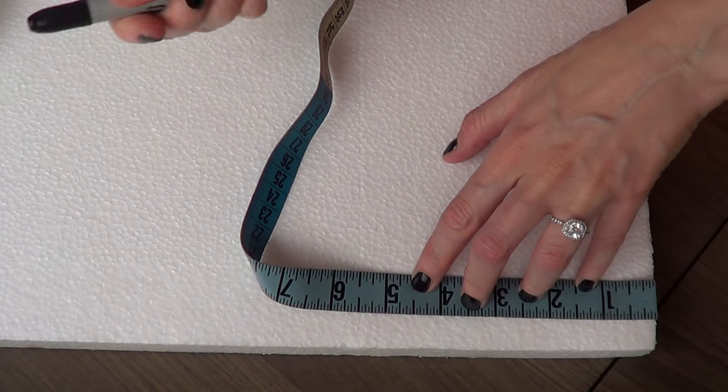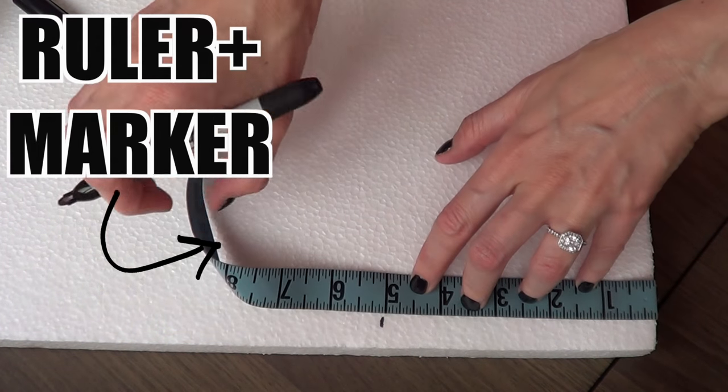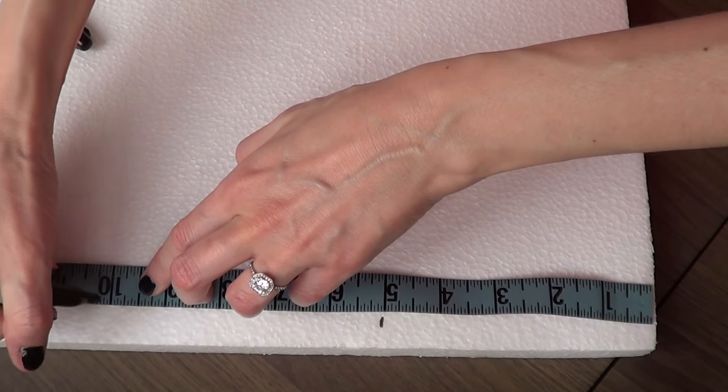Hey guys, it's Renee. Welcome to this home decor DIY. The first thing we need for this DIY is a foam board, and I'm going to be using a ruler and a marker to help myself mark where I want my pieces to be.